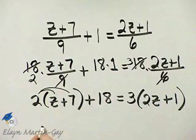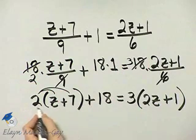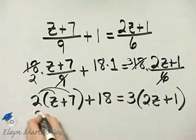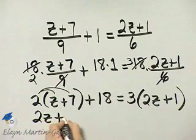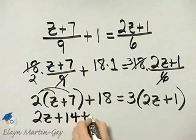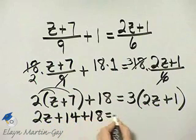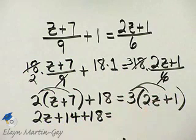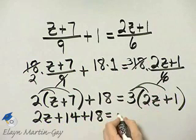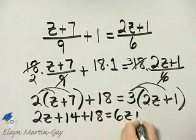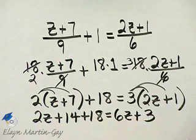Now, let's go ahead and use the distributive property. That's 2z plus 14, 2 times 7 is 14, plus 18 is equal to distributive property again, 3 times 2z, that's 6z plus 3 times 1 is 3.